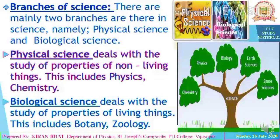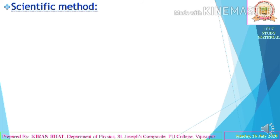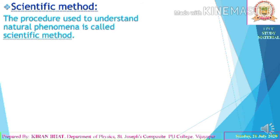The branches of science include physics, chemistry, biology, earth science, and space science. Now we will look at the scientific method — one particular way of studying science. The definition of scientific method is: the procedure used to understand natural phenomena.